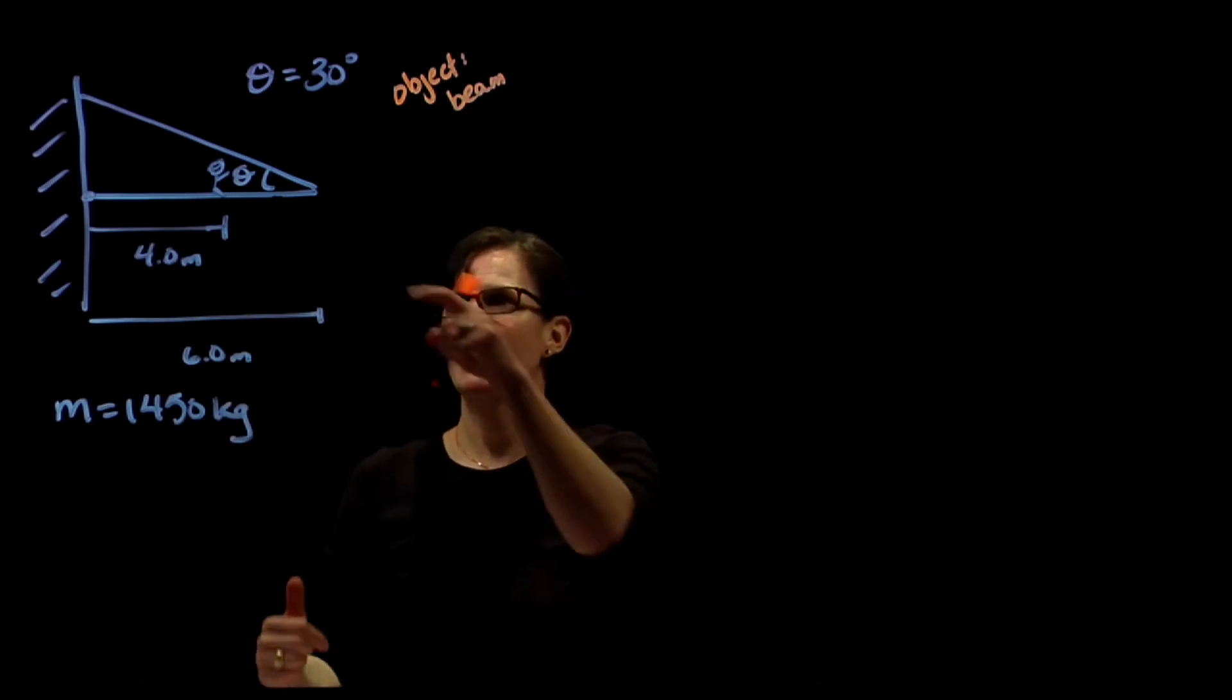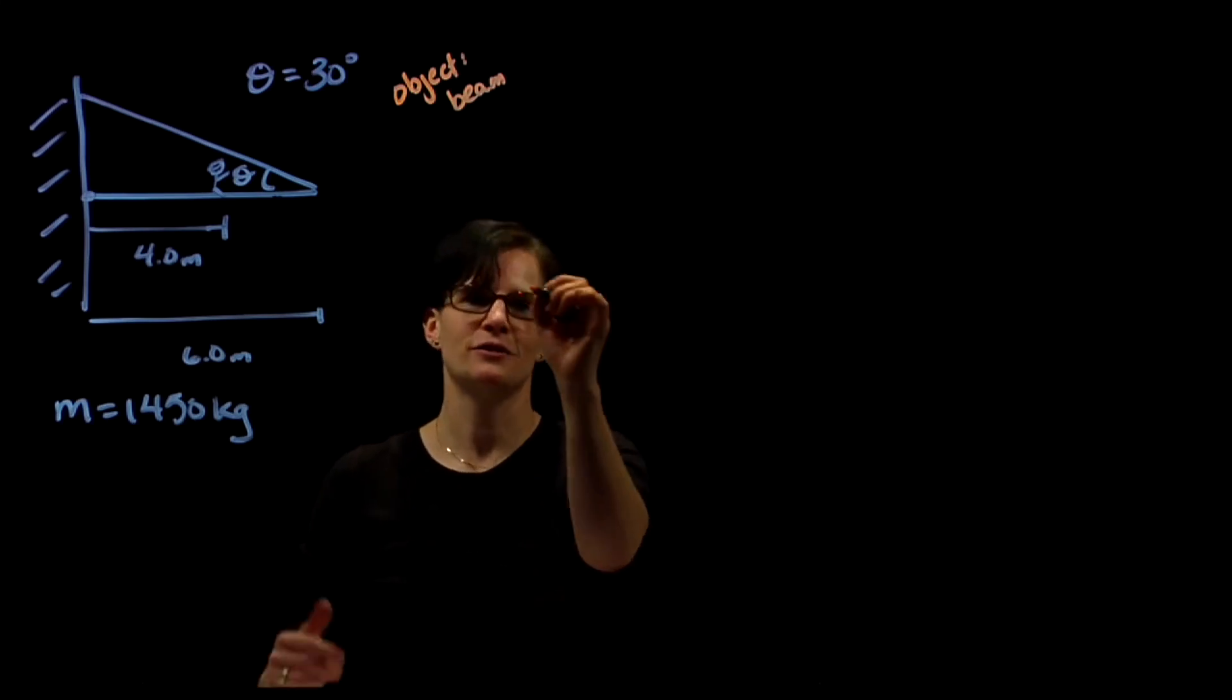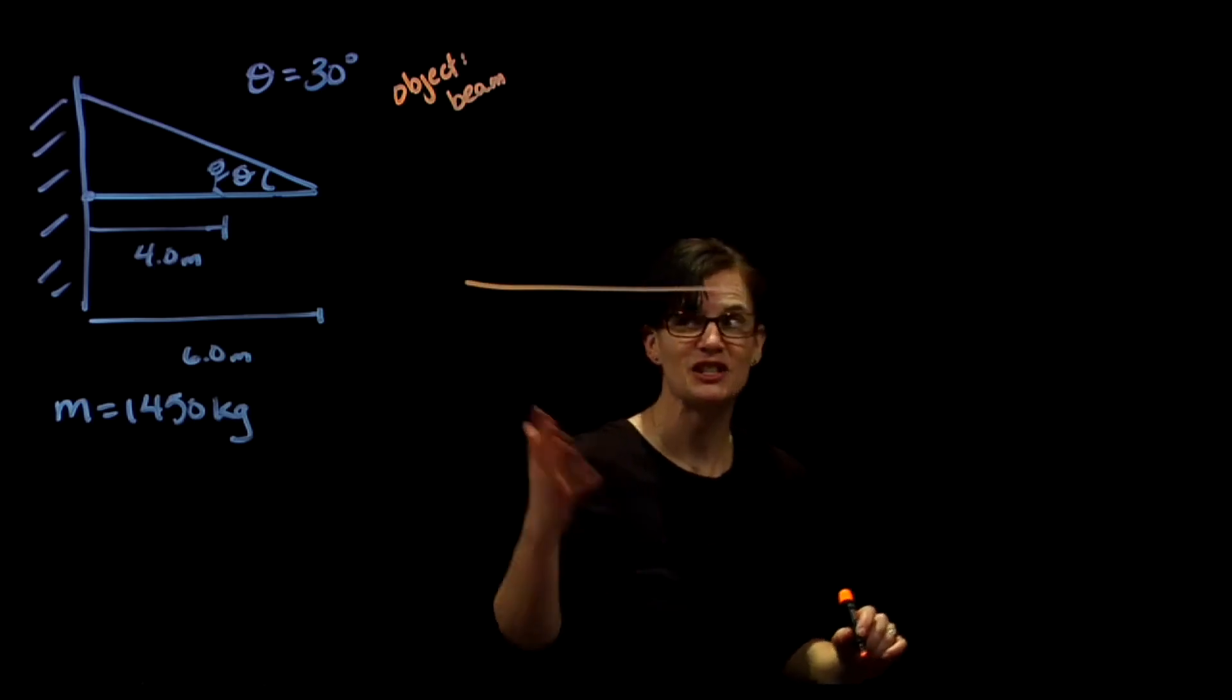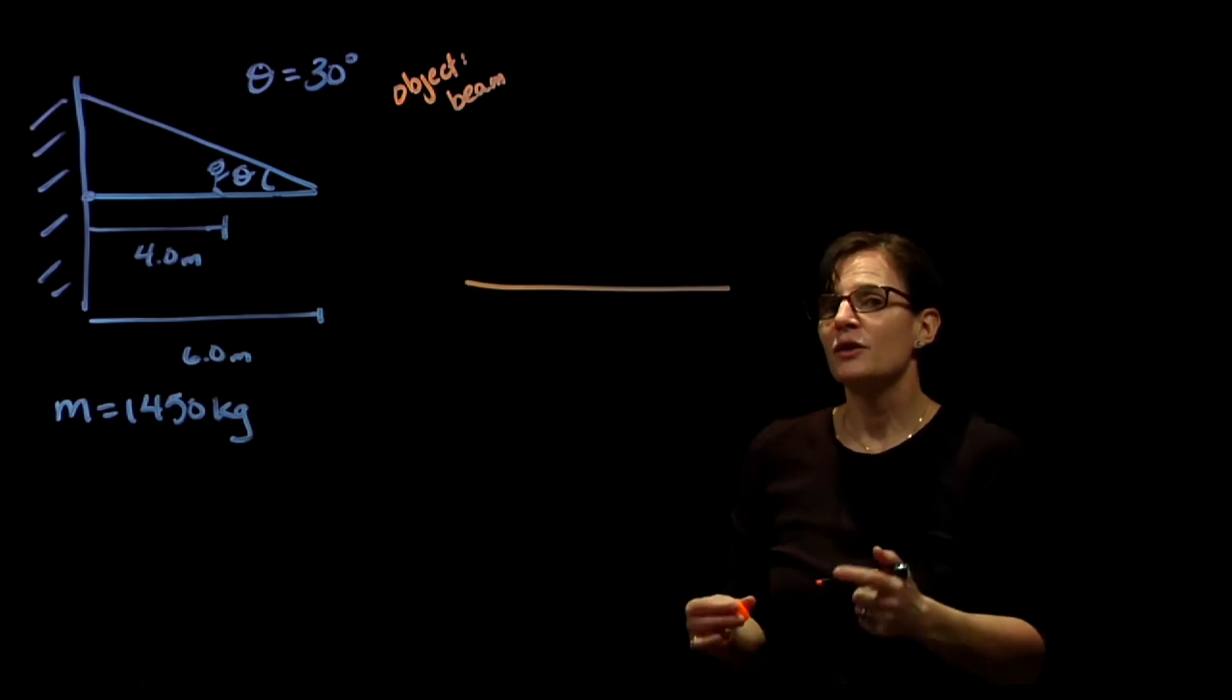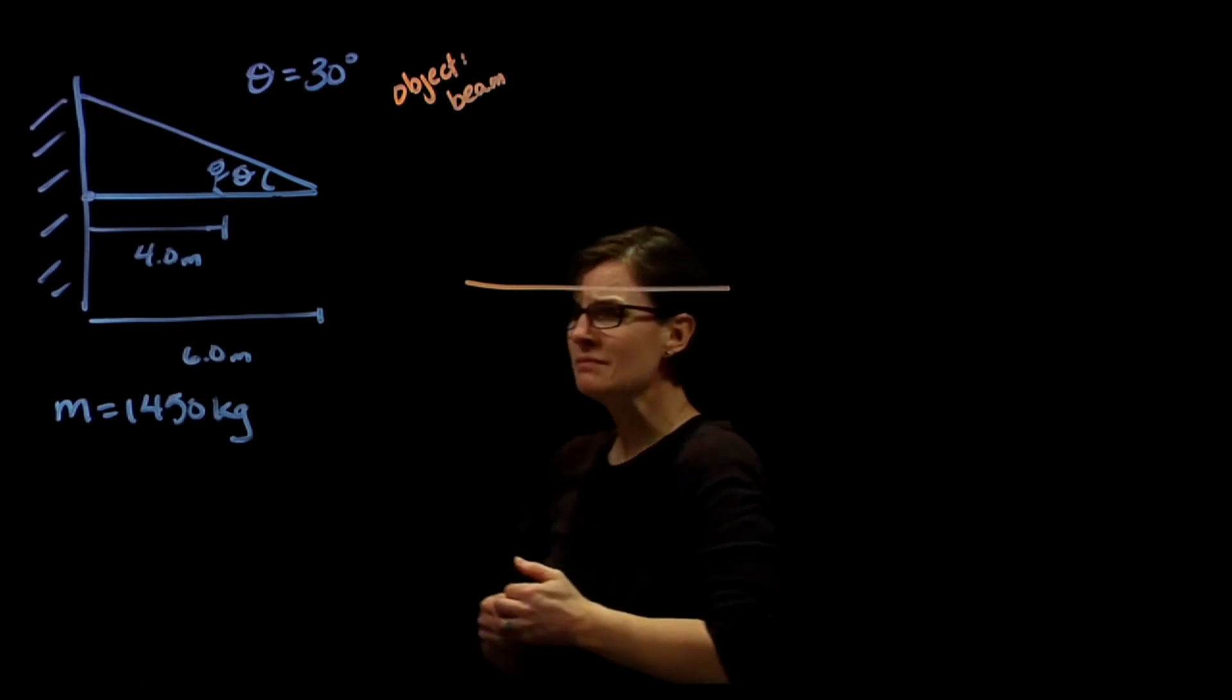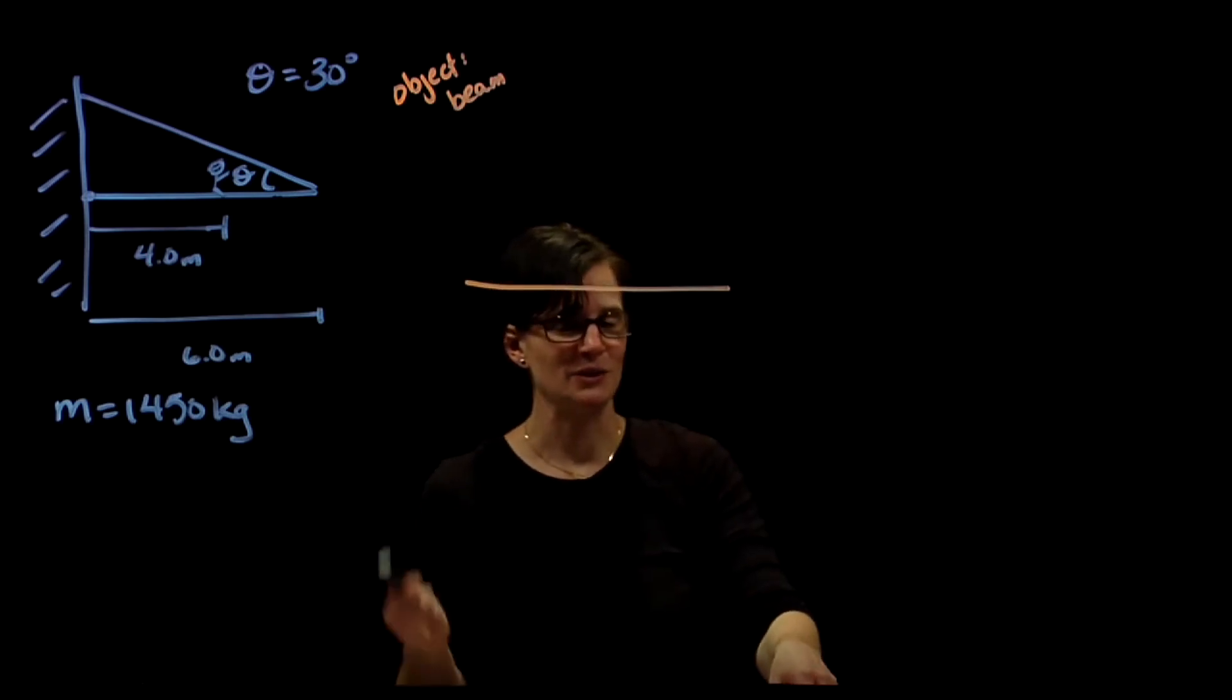If I want to look at the torques exerted about that beam, I'm going to draw my extended free body diagram of the beam. I like to draw it in the orientation of the object itself. We're then going to look at the forces, draw the forces on the beam, and we're going to draw them at the location that they're acting.